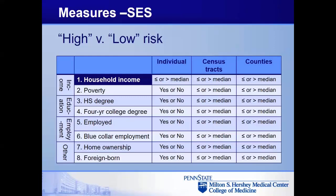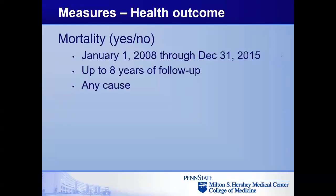I evaluated eight SES measures, but today I'm just going to focus on household income. At the individual level, this is whether your household income is less than or equal to the U.S. median or greater than the U.S. median. Similarly, for census tracts and counties, whether you live in a census tract or county that's below or above the U.S. median for household income. For mortality outcomes, I'm focused on all-cause mortality over the follow-up period, yes or no.